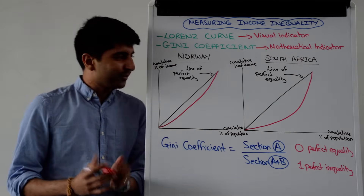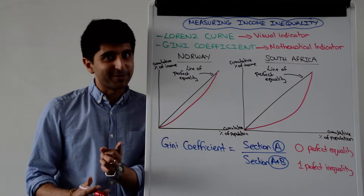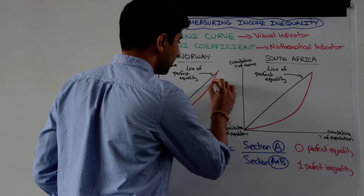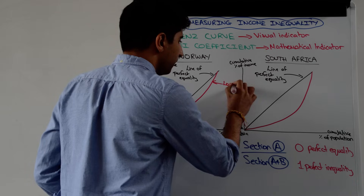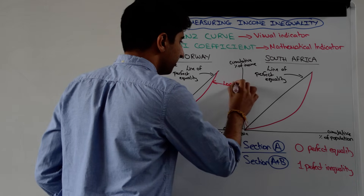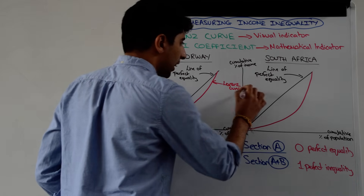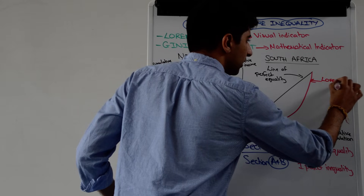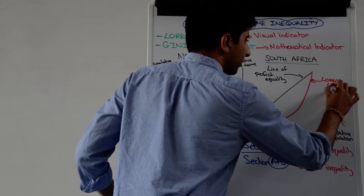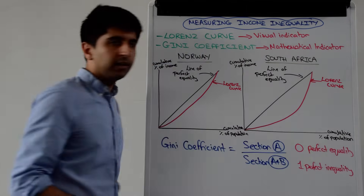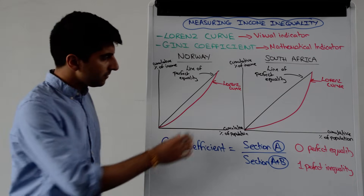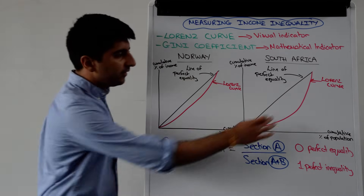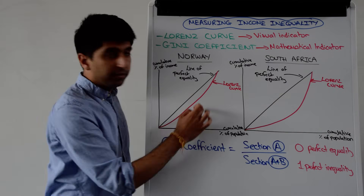As good economists, we need to label our curves. So we quickly label that Lorenz curve for Norway and label that Lorenz curve for South Africa. Always show the examiner that you know what you're drawing and what those curves are called. Hopefully you can see visually that South Africa's curve is more unequal than Norway's.